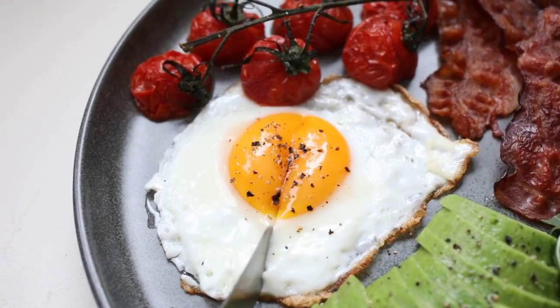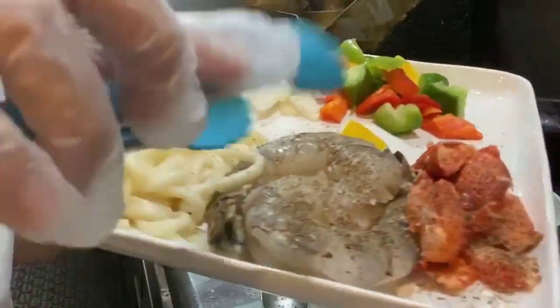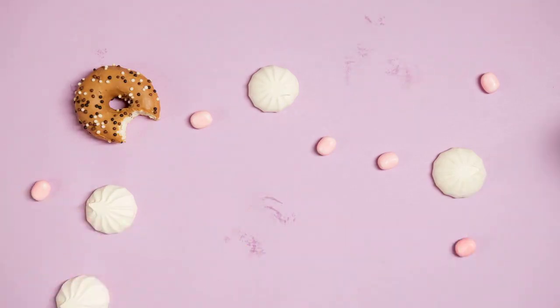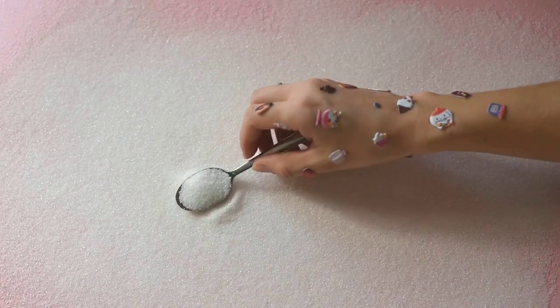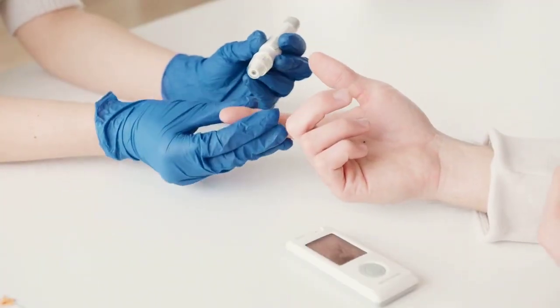Types of carbohydrates. There are two main types of carbohydrates: simple and complex. Simple carbohydrates are quickly digested and absorbed, which can cause a rapid spike in blood sugar levels. Complex carbohydrates are digested more slowly, which helps to keep blood sugar levels more stable.